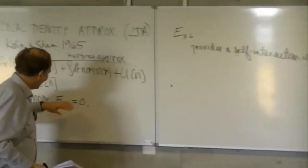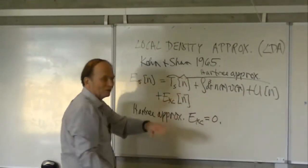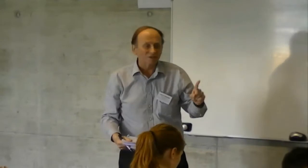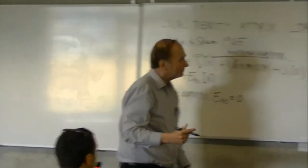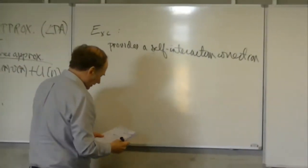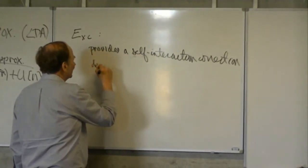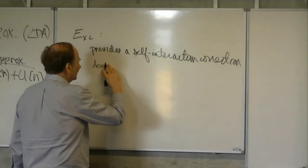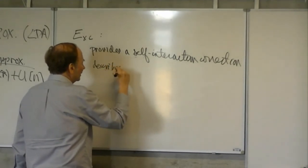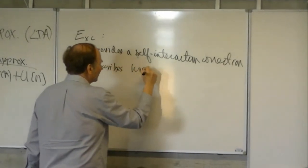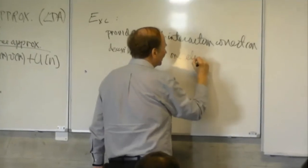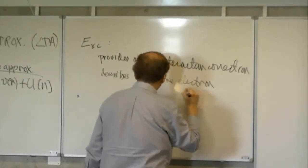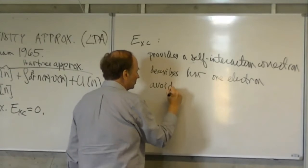If you leave out EXC and apply the Hartree equation to a one-electron problem, you get the wrong answer — as Karan pointed out. So EXC has to provide a correction that makes the functional exact for any one-electron density. It also describes how one electron avoids another as the electrons move through the density.